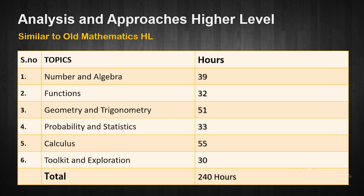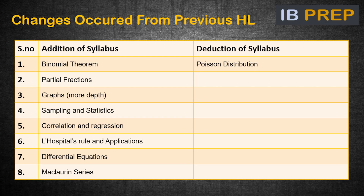In terms of the changes from the previous course, binomial theorem, partial fractions, graphs with more depth, sampling and statistics, correlation and regression, L'Hôpital's rule and applications, differential equations, and Maclaurin series were added, and Poisson distribution was deleted.